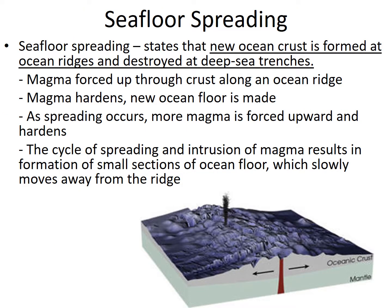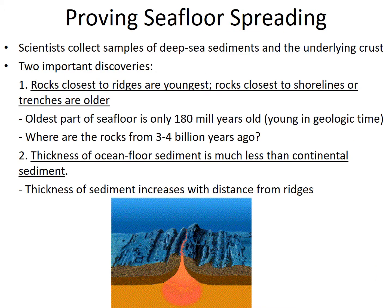Seafloor spreading states that new ocean crust is formed at ocean ridges and destroyed at deep sea trenches. At the ocean ridge, magma is forced up through the crust along the ridge, hardens as it hits the ocean floor due to the water, and then spreads as more magma is moved upward. The cycle of spreading and intrusion results in formation of small sections of the floor, which slowly move away from the ridge. The rocks closest to the ridges are youngest, and the rocks closest to the shorelines or trenches are the oldest.